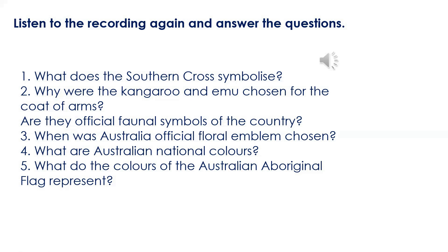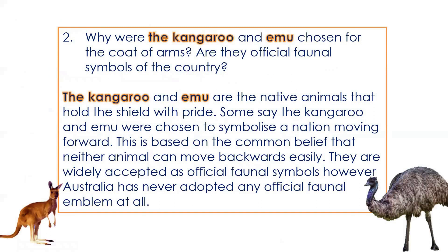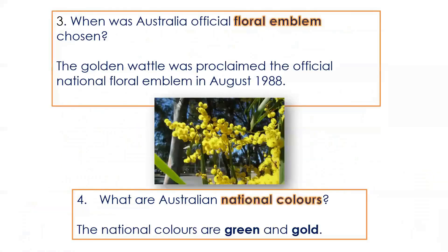Let's go through the answers and see whether you've managed to catch all the necessary information. What does the Southern Cross symbolize? Question number one — the answer is: it's a reminder of Australia's geography. Number two: why were the kangaroo and emu chosen for the coat of arms? Are they official faunal symbols of the country? The kangaroo and emu are the native animals that hold the shield with pride. Some say they were chosen to symbolize a nation moving forward, based on the belief that neither animal can move backwards easily. They are widely accepted as official faunal symbols; however, Australia has never adopted any official faunal emblem.